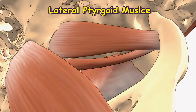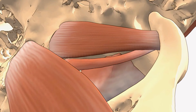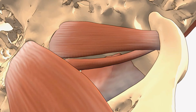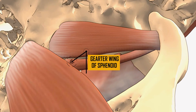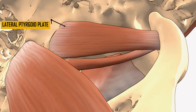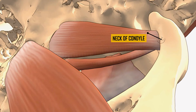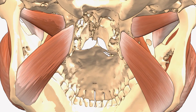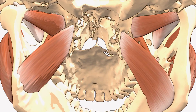The lateral pterygoid muscle has a triangular shape with two heads — superior and inferior — and horizontally orientated muscle fibers. The superior head originates from the greater wing of the sphenoid. The inferior head originates from the lateral pterygoid plate of the sphenoid. The two heads converge into a tendon which attaches to the neck of the mandible. Acting bilaterally, the lateral pterygoids protract the mandible, pushing the jaw forwards. Unilateral action produces side-to-side movement of the jaw. Contraction of the lateral pterygoid produces lateral movement to the contralateral side — for example, contraction of the left lateral pterygoid deviates the mandible to the right.